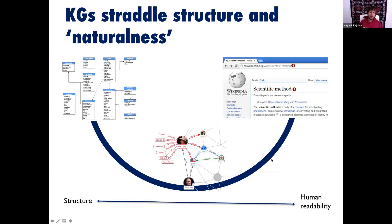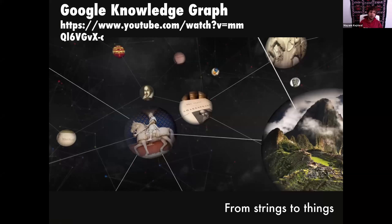In the Google Knowledge Graph, they were trying to move from strings to things — recognizing that 'San Jose' is not just characters, but an actual city. If we can recognize that, we can understand the user's query much better and produce very rich results, which is exactly what you see now in search. The search engine has become very good at understanding queries, and knowledge graphs are one of the technologies that led to that.